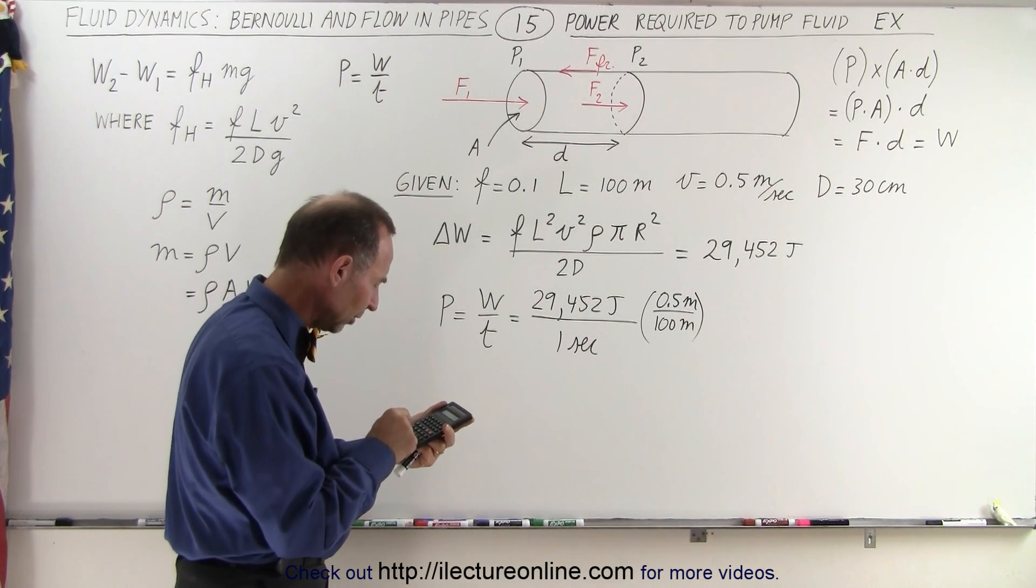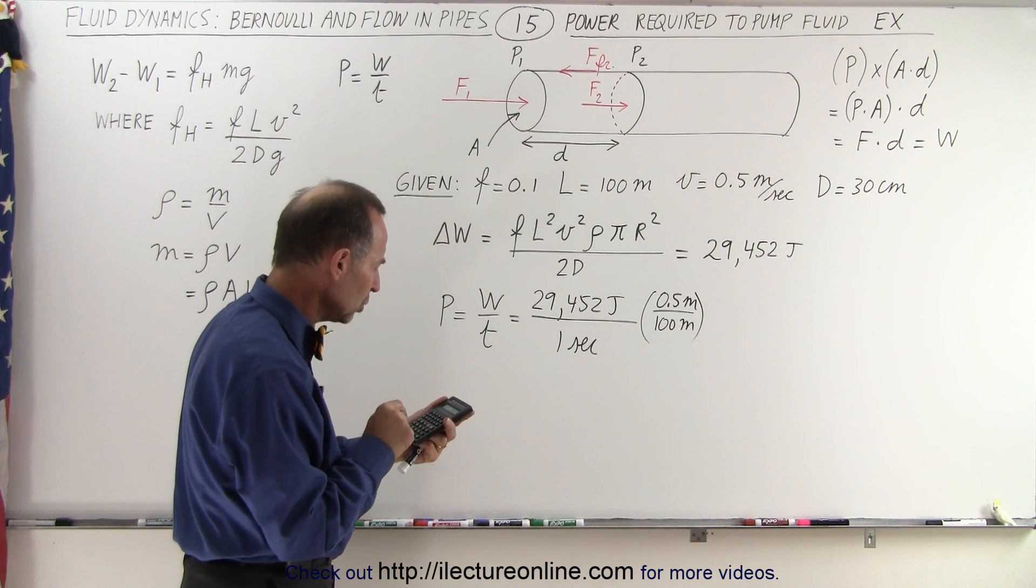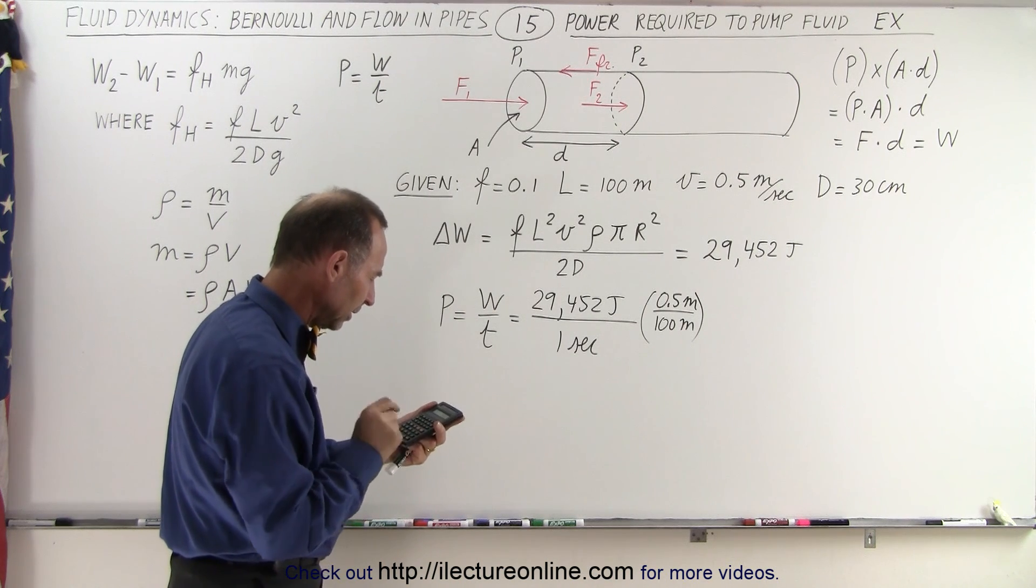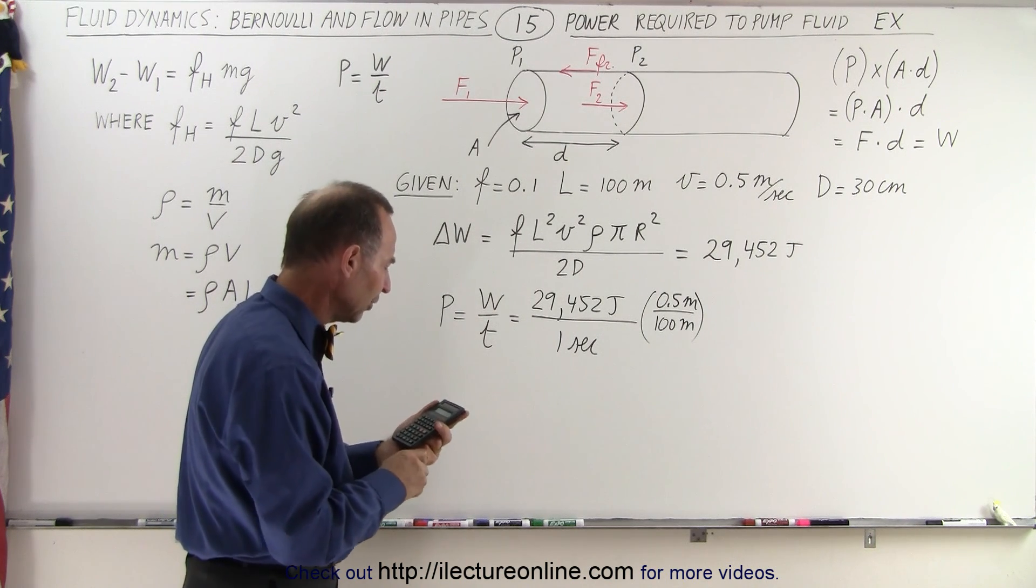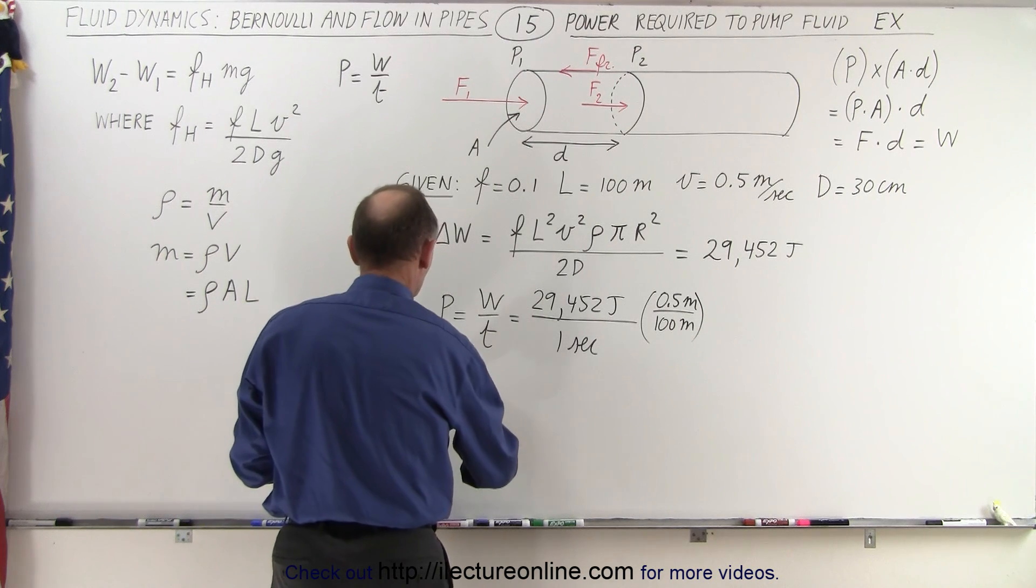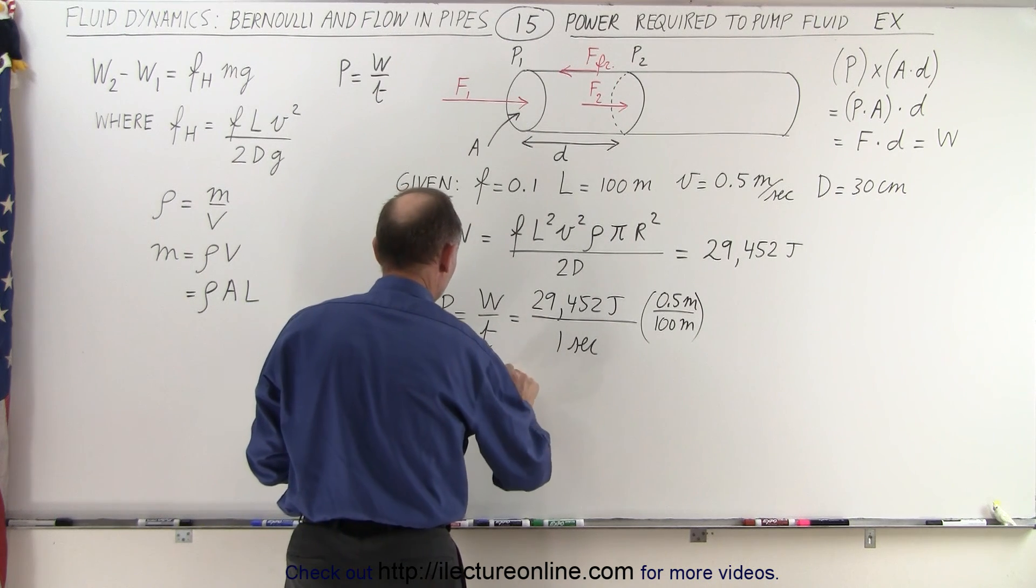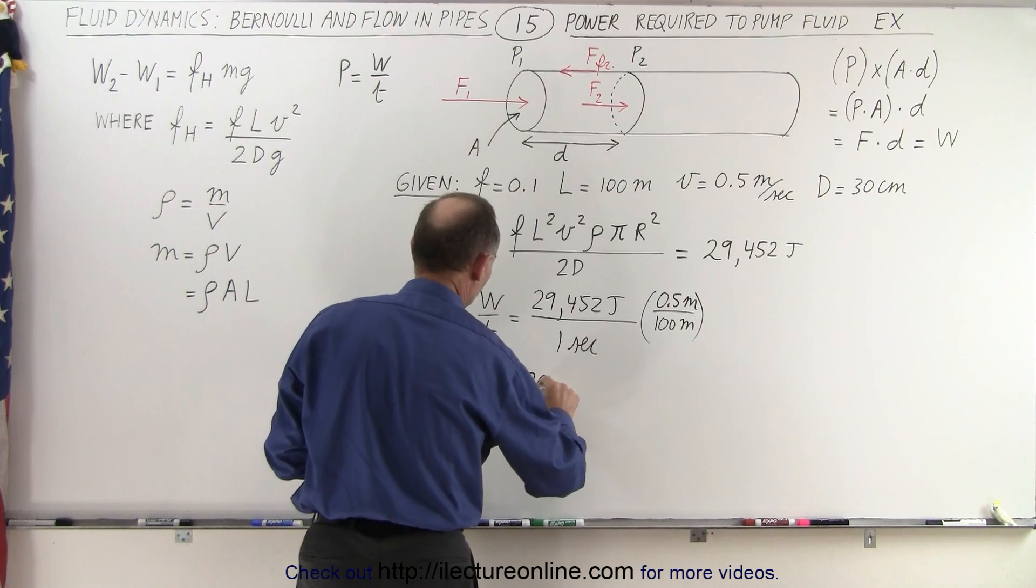We have 29,452 divided by 200, and that would be 147.25. So the power would be equal to 147.26 watts.